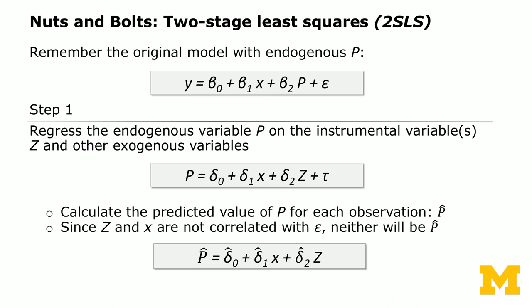Since z and x are not correlated with epsilon, neither will p-hat be. Your p-hat — the estimated participation decision — is calculated as: delta_0-hat plus delta_1-hat times x plus delta_2-hat times z. That's step one.